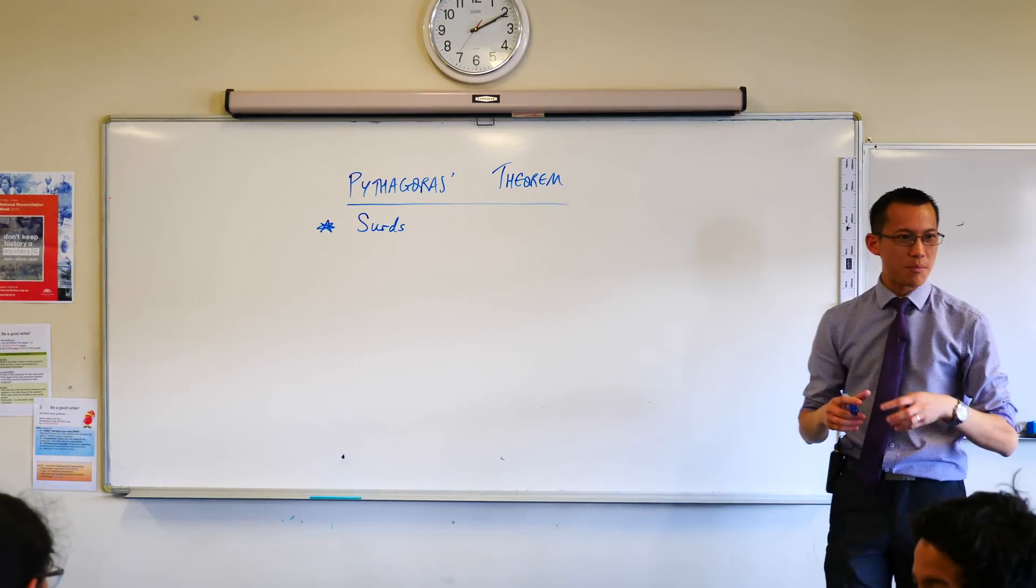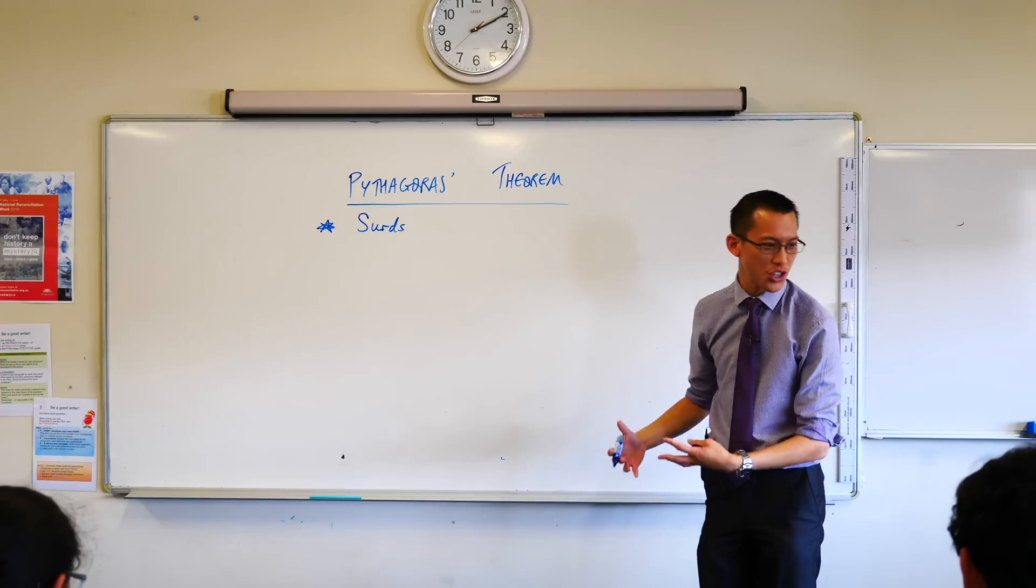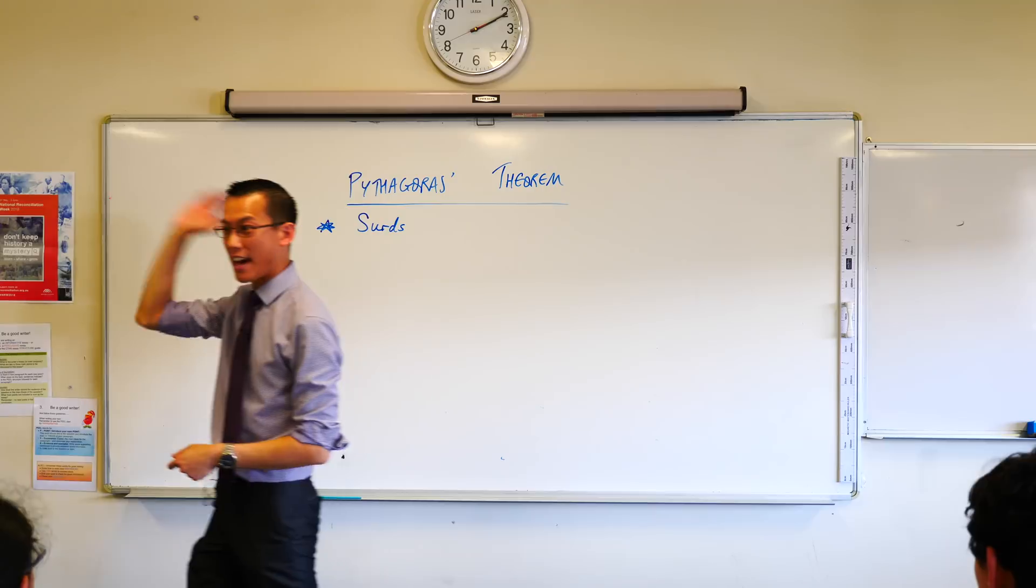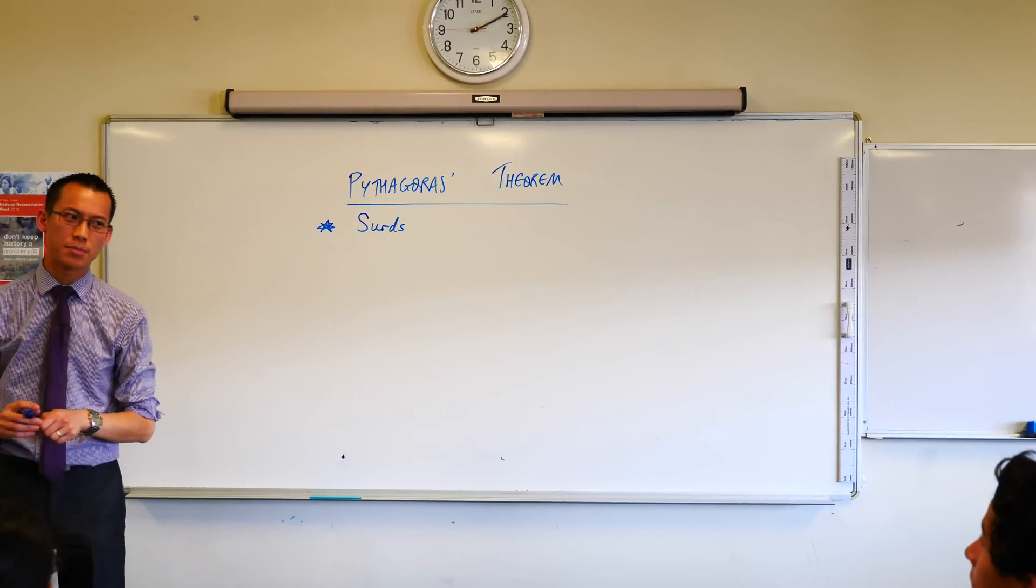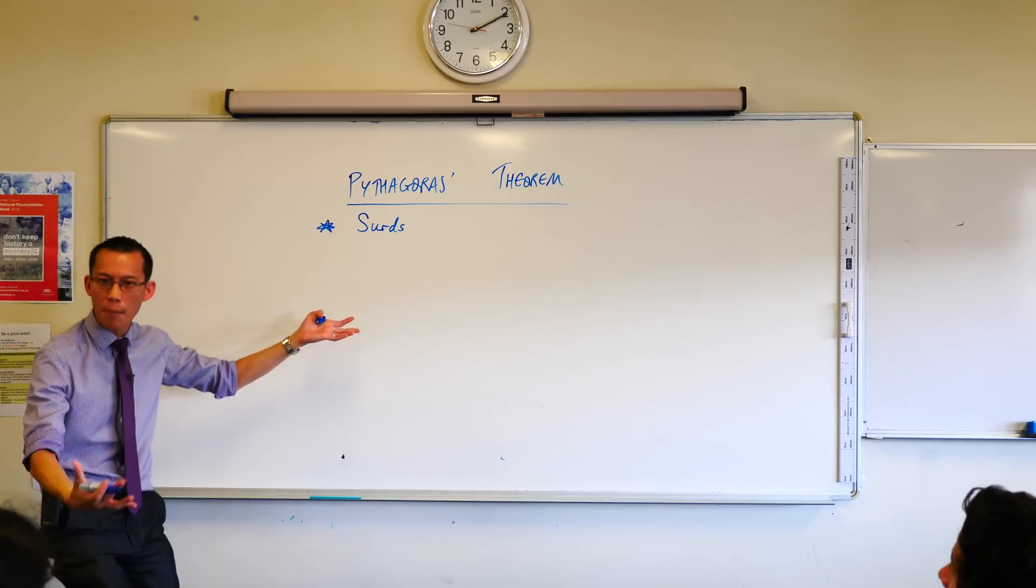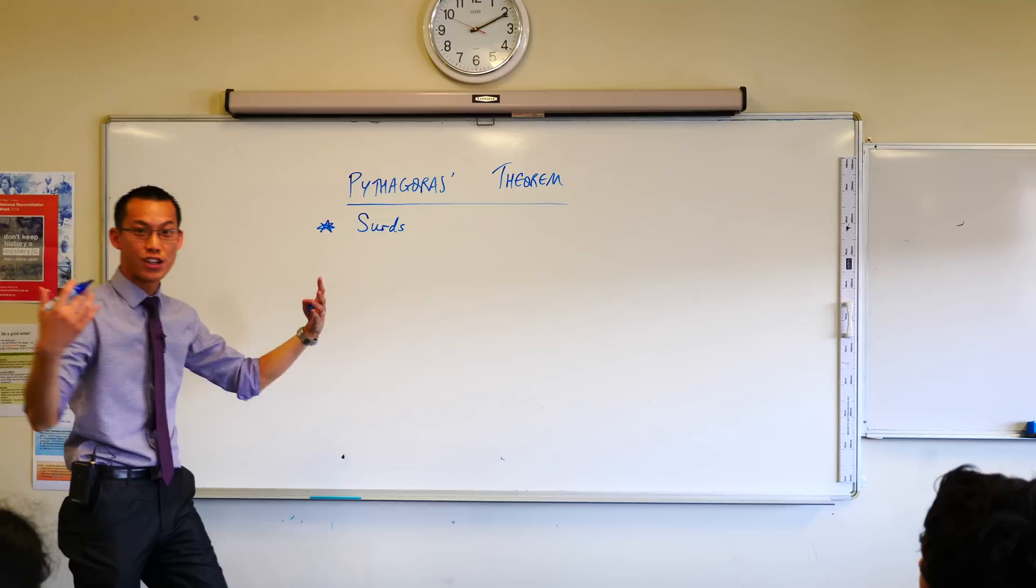They're a bit weird because you can't count to a surd. You could count 1, 2, 3, 4, 5. You could keep on counting forever and you'd never get to a surd because surds come about through something different. Can someone give me an example, any example you like, of a surd?